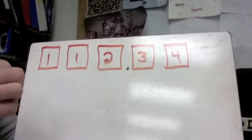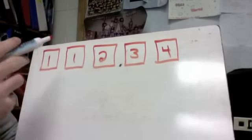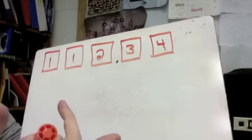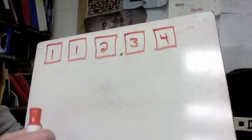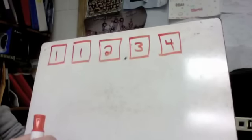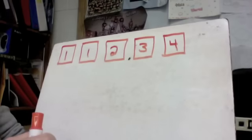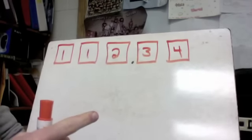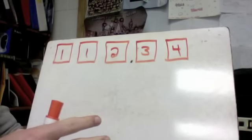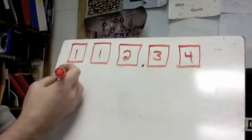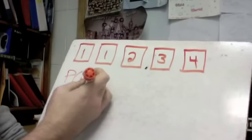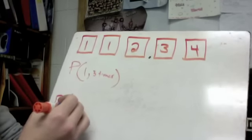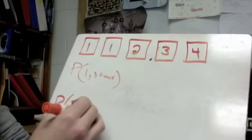Next, we have five cards labeled one, one, two, three, and four. Each time we draw a card we put it back, so we always have five outcomes. I want to find the odds of drawing a one three times in a row compared to the odds of drawing a two three times in a row, and see how they compare.